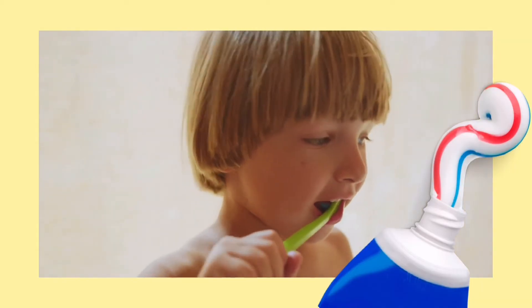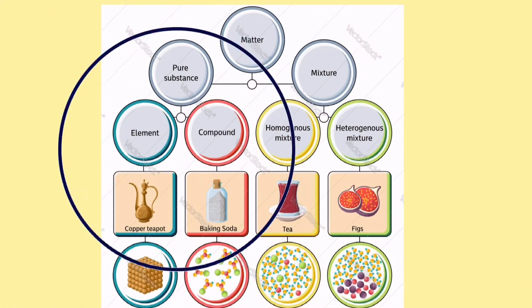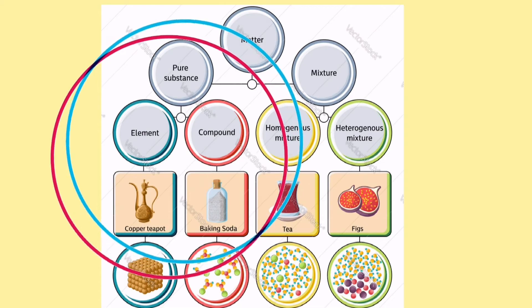Remember that substance and matter are broken down into two categories: they can either be pure substance or mixture. Pure substances are further broken down into elements and compounds.